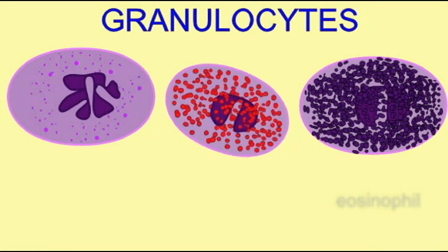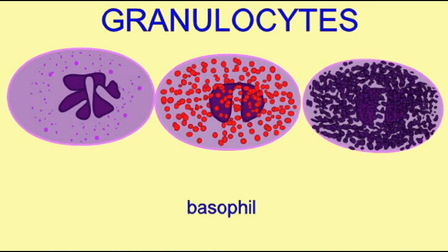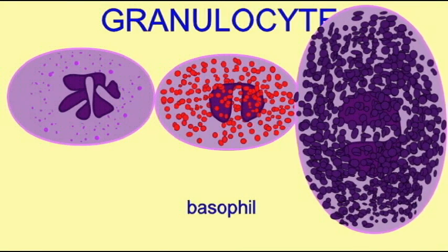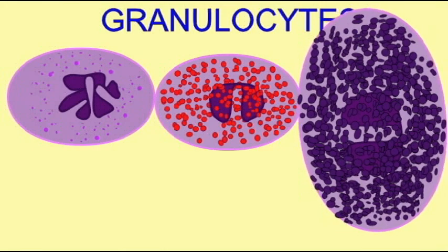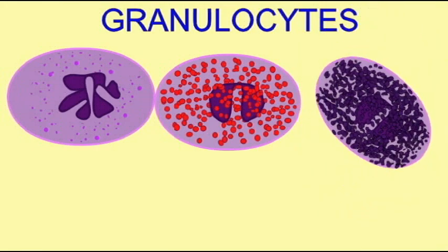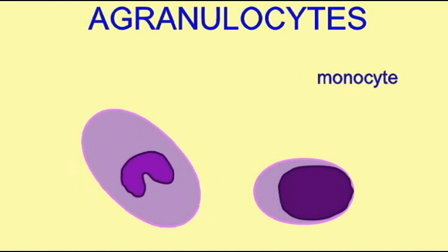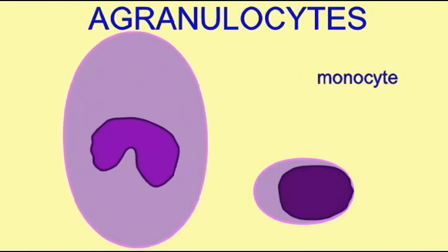Eosinophils with their red granules, and basophils with their abundant dark purple granules. There are two types of agranulocytes which do not have these lysosomes picking up the right stain.